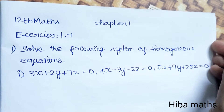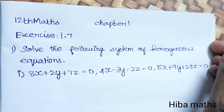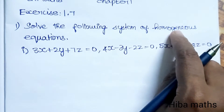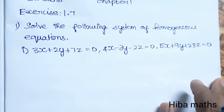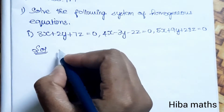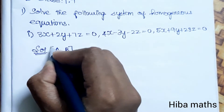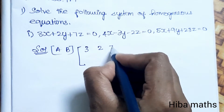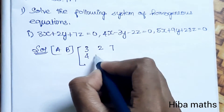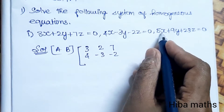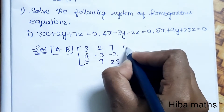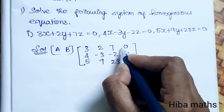Hello students, welcome to Hibamax 12th standard, Chapter 1, Exercise 1.7, first question: solve the following system of homogeneous equations. For homogeneous equations, since they are equal to zero, we write the augmented matrix. The A matrix is: row 1: 3, 2, 7; row 2: 4, -3, -2; row 3: 5, 9, 23. The B matrix has only zeros.